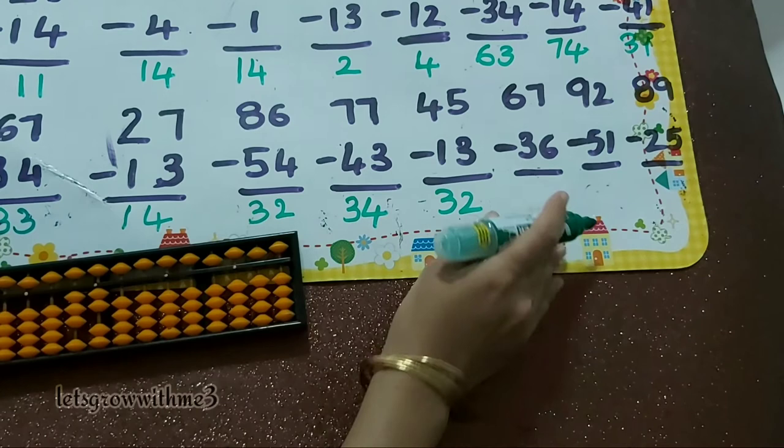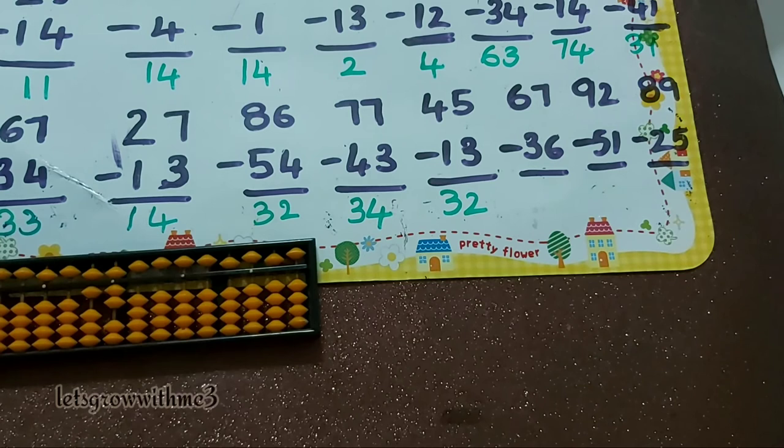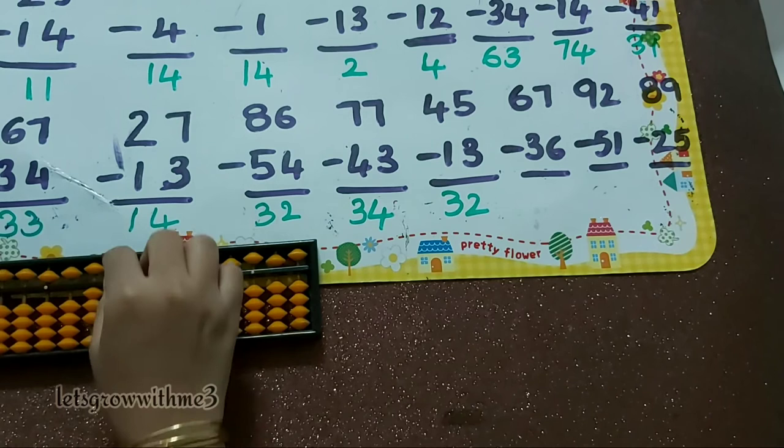Next one, 67 minus 36: minus 3, minus 5 plus 2. Minus 6 — direct. So the answer is 31.